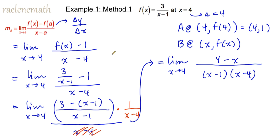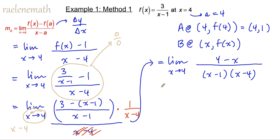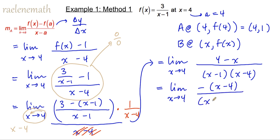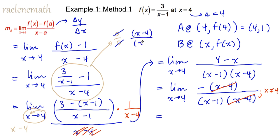We had a 0 over 0 indeterminacy when we directly substituted, which suggests that if the limit does exist, we have a common factor. The common factor is going to occur at x minus 4, when x is 4. We just need careful factoring because there is a negative to be factored out in the top. That gives us the x minus 4 factors in the top and the bottom reducing, as long as x does not equal 4 — which it isn't, since x is only approaching 4. Now we can directly substitute because we've reduced the indeterminacy from the common factor of x minus 4. The numerator becomes negative 1, and 4 minus 1 gives us 3, so we have a tangent slope of negative 1 third.